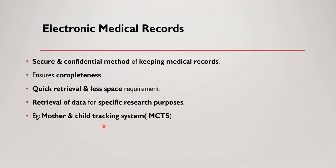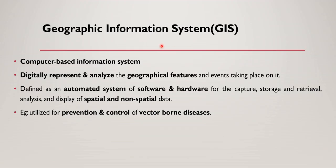Next is GIS — Geographic Information System. It is a computer-based information system which digitally represents and analyzes geographical features and events taking place on them. It is defined as an automated system of software and hardware for the capture, storage, retrieval, analysis and display of spatial and non-spatial data. A notable application is in the prevention and control of vector-borne diseases.